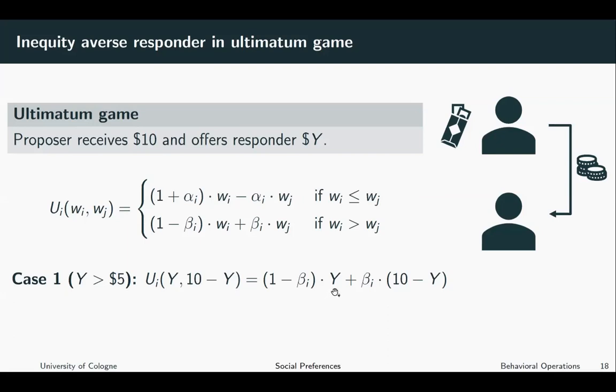So independent of the split offered, as long as it is larger than five dollars, the responder is always better off when accepting than rejecting. So rejecting implies the utility of zero. Accepting implies this utility and this utility is always greater than zero. So if the proposer makes an offer greater than five dollars, the proposer can be sure that this offer is accepted.